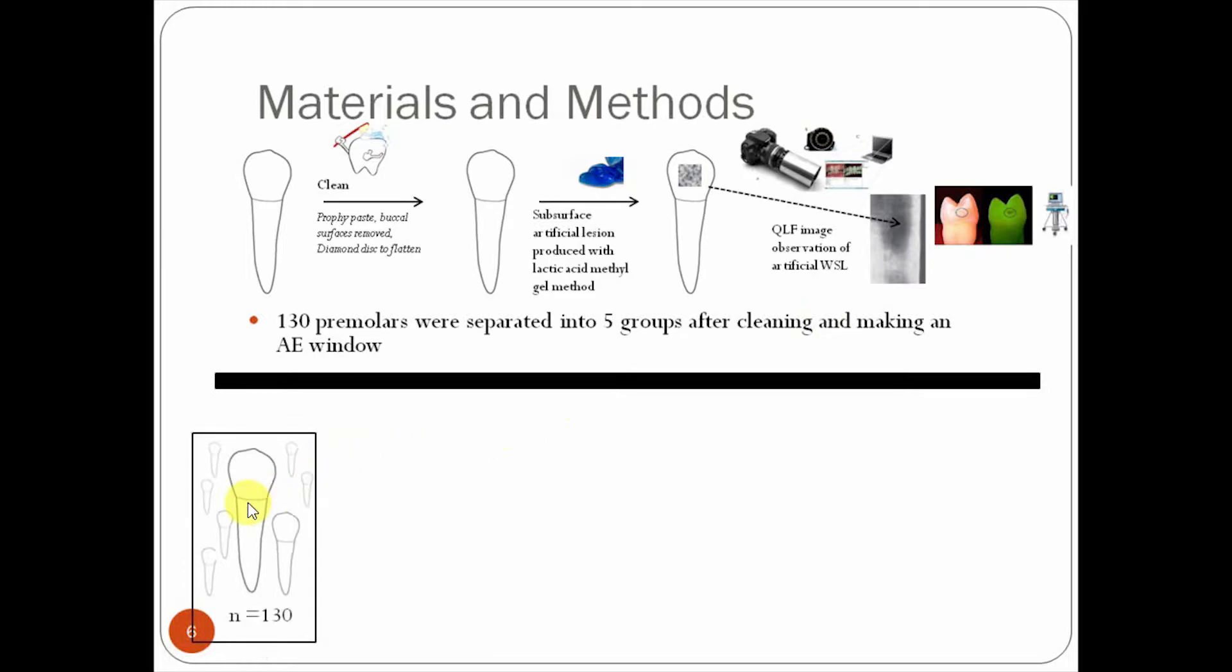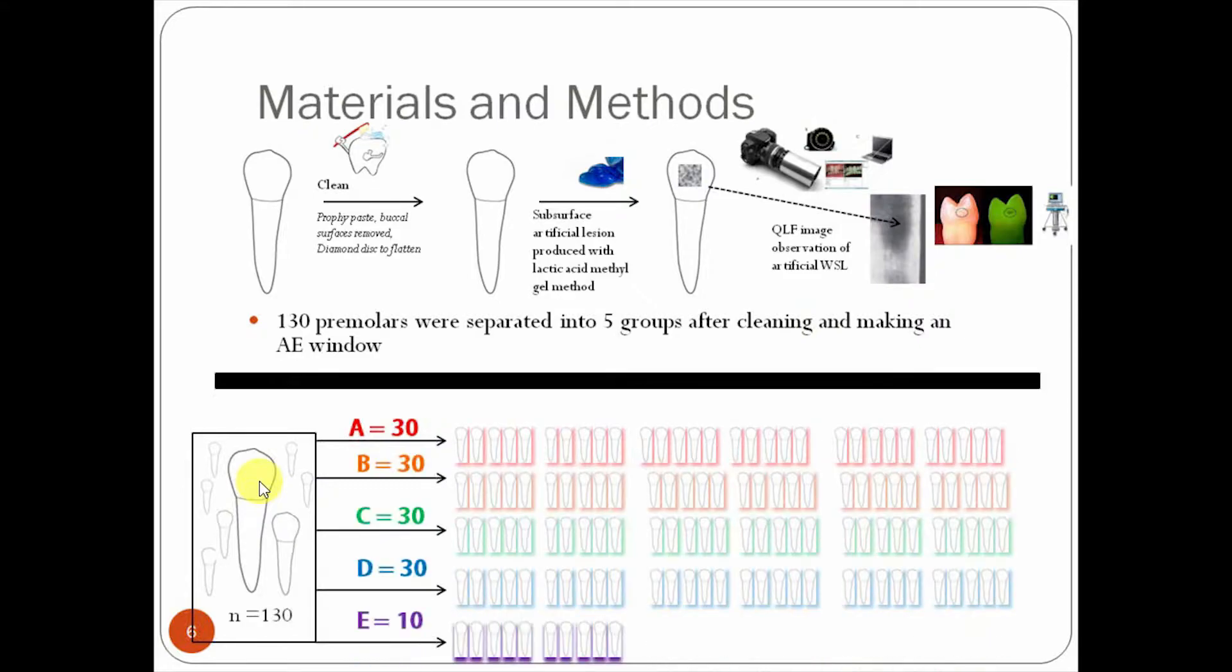And to be specific, they were using 130 premolars, and they separated them into five groups. So what do the groups look like? Again, 130 premolars, and we separate into five groups. First, we had A, B, C, D, and E, where the first four groups have 30, and the last group has 10. The 10 would be the control, so they're not going to be really exposed to any of the remineralizing solutions. On to slide 7.